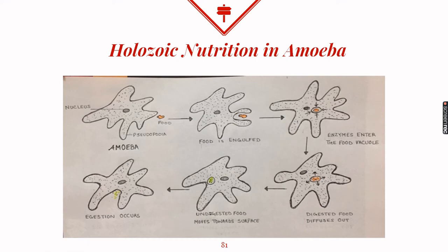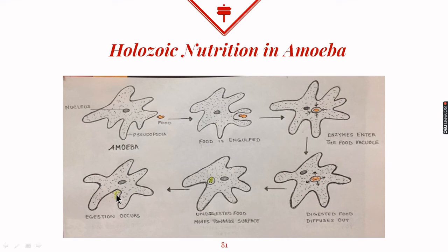In this slide we can see all the steps of holozoic nutrition in amoeba, and this is the diagram you need to draw as well. The first diagram shows food approaching the body of amoeba. The next step shows ingestion, where food is engulfed with the help of pseudopodia. Digestion occurs when lysosomes release enzymes inside the food vacuole and break it down. Simple food is then absorbed and assimilated inside amoeba. Undigested food is taken towards the cell membrane and thrown out — that is, egestion occurs.